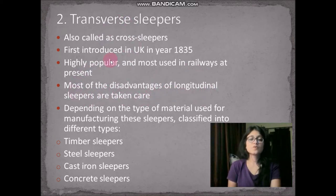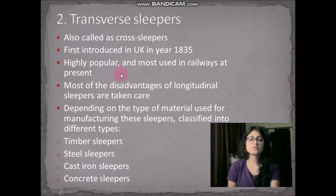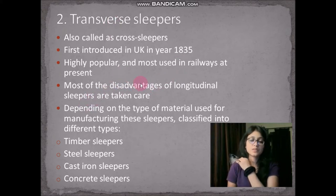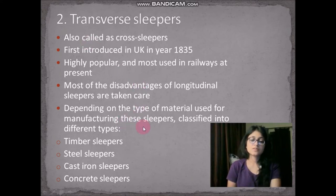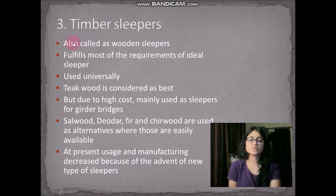Transverse sleepers are placed in a transverse direction to the rail and are mostly used today. Depending on the type of material used for manufacturing, these sleepers are classified into timber, steel, cast iron, and concrete sleepers.